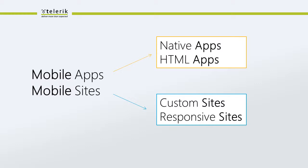When building native versus HTML apps, we're really talking about different technologies to achieve a similar result. The advantage with HTML is you can write once and, with some modifications, quickly deploy to all those devices. With a native app, we have to learn multiple technology stacks — Objective-C for Apple, Java for Android, Silverlight/.NET and XAML for Windows Phone — maintaining multiple developer skill sets. HTML can help us build apps without requiring that.